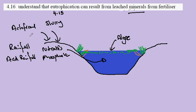So our sources of minerals are artificial fertilizers or animal slurry applied to fields in agriculture. The nitrates and phosphates are washed by runoff into the water.